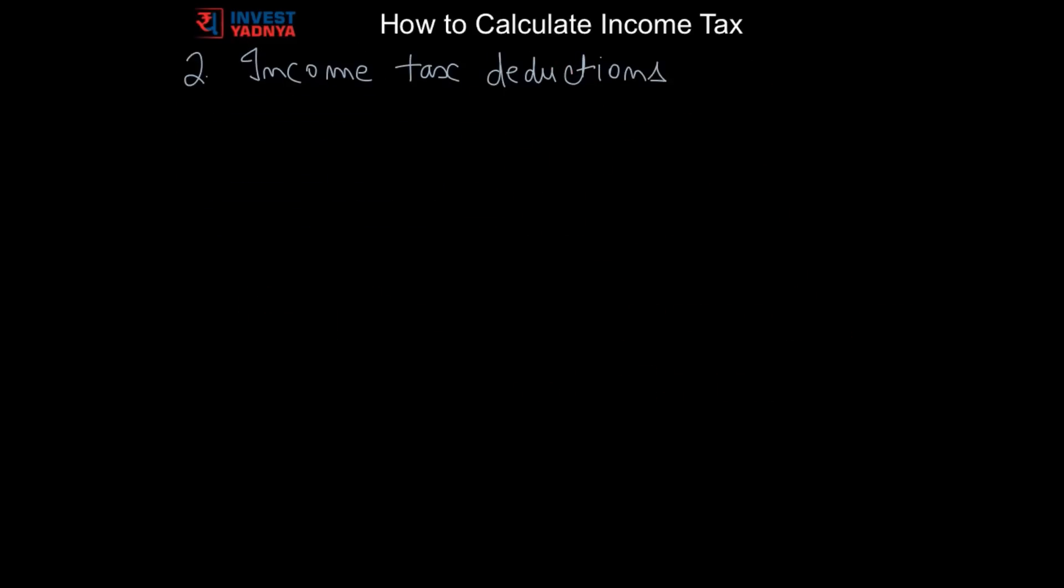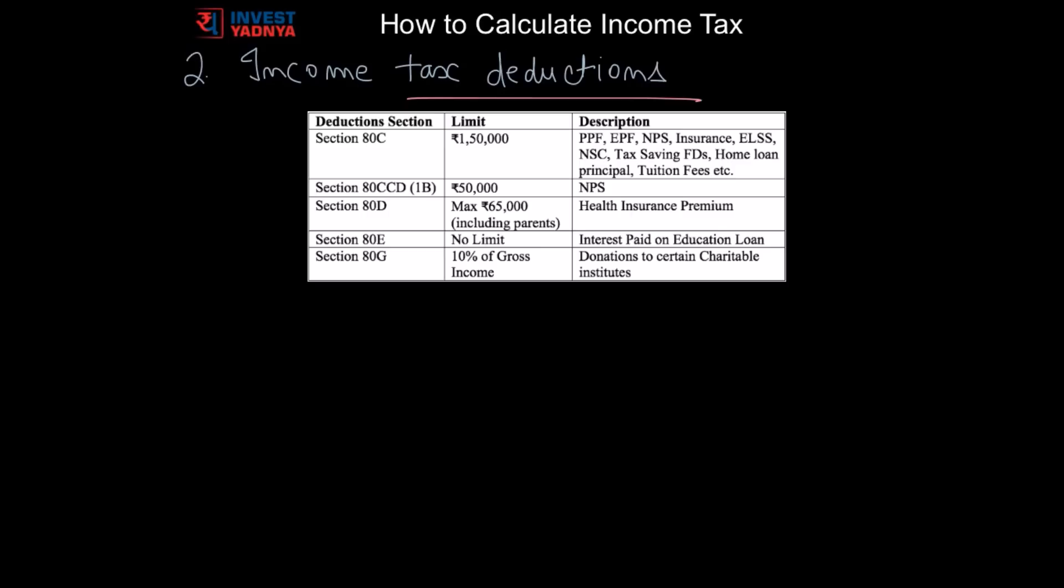Now after knowing your gross income, next step is to calculate tax deductions, which is a way to reduce taxable income and therefore the tax that one needs to pay. You can claim the deductions under different heads. Popular ones are shown in the table here. If you invest in any of these places you can get tax deduction of maximum up to Rs 1.5 lakhs on your gross income. Similarly if you invest money in NPS tier 1 you get maximum Rs 50,000 per year as tax deduction. All these deductions and many more are discussed in detail in our tax saving playlist.